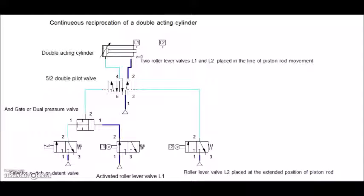Hi, this is a video about continuous reciprocation of a double acting cylinder. In the present position, a double acting cylinder is kept in its home position by the compressed air going through the 5 by 2 double pilot valve and getting into the cylinder through this port.